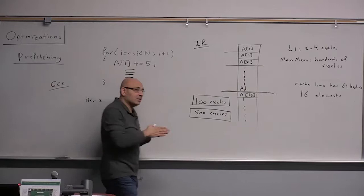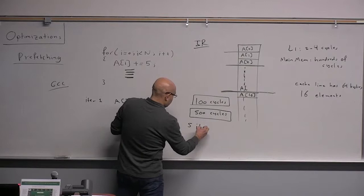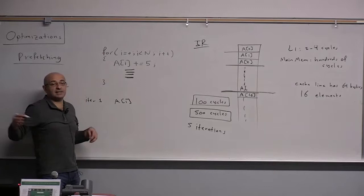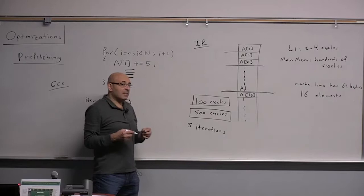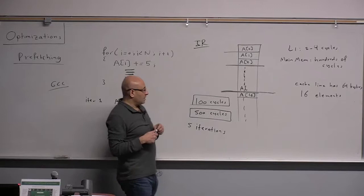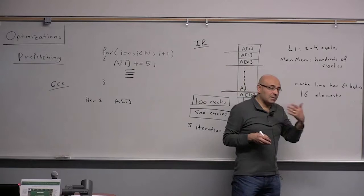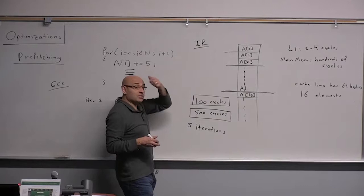Each iteration is 100 cycles, and you need 500 cycles to fetch from main memory to L1 cache. So you will need five iterations. If you fetch five iterations ahead, then by the time you need that memory location, it will be in L1 cache, hopefully. By looking at an estimate of cycles to execute the loop and cycles to fetch from memory — if this is five times more — you need to fetch five iterations ahead, because each iteration is 100 cycles.